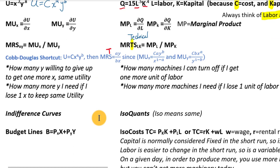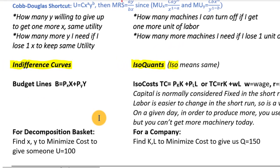In production analysis, the equivalent of indifference curves is called isoquants. The prefix 'iso' means 'same,' similar to 'homo.' So along an isoquant, we're producing the same amount of output — just like everywhere along the same indifference curve, we have the same amount of utility.